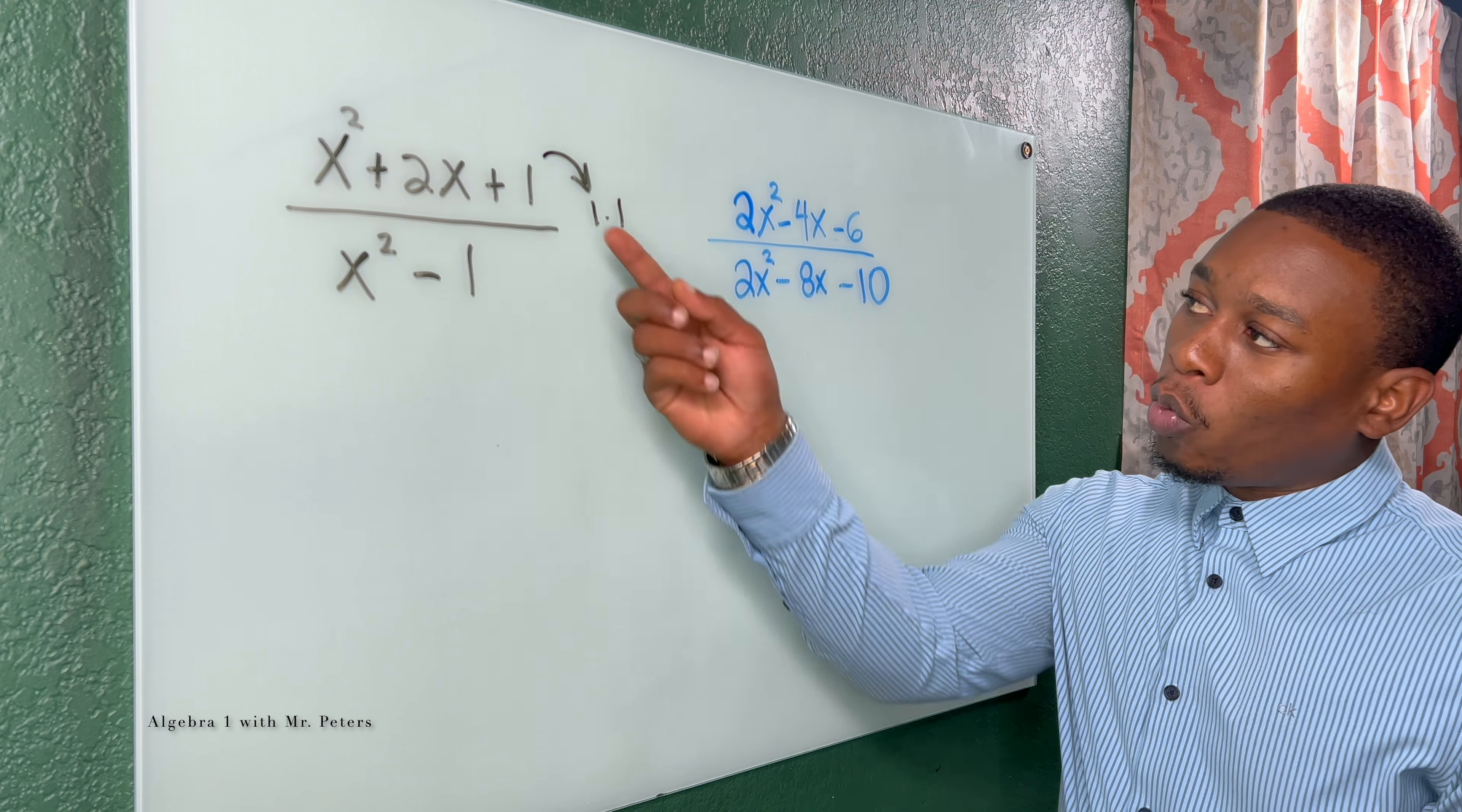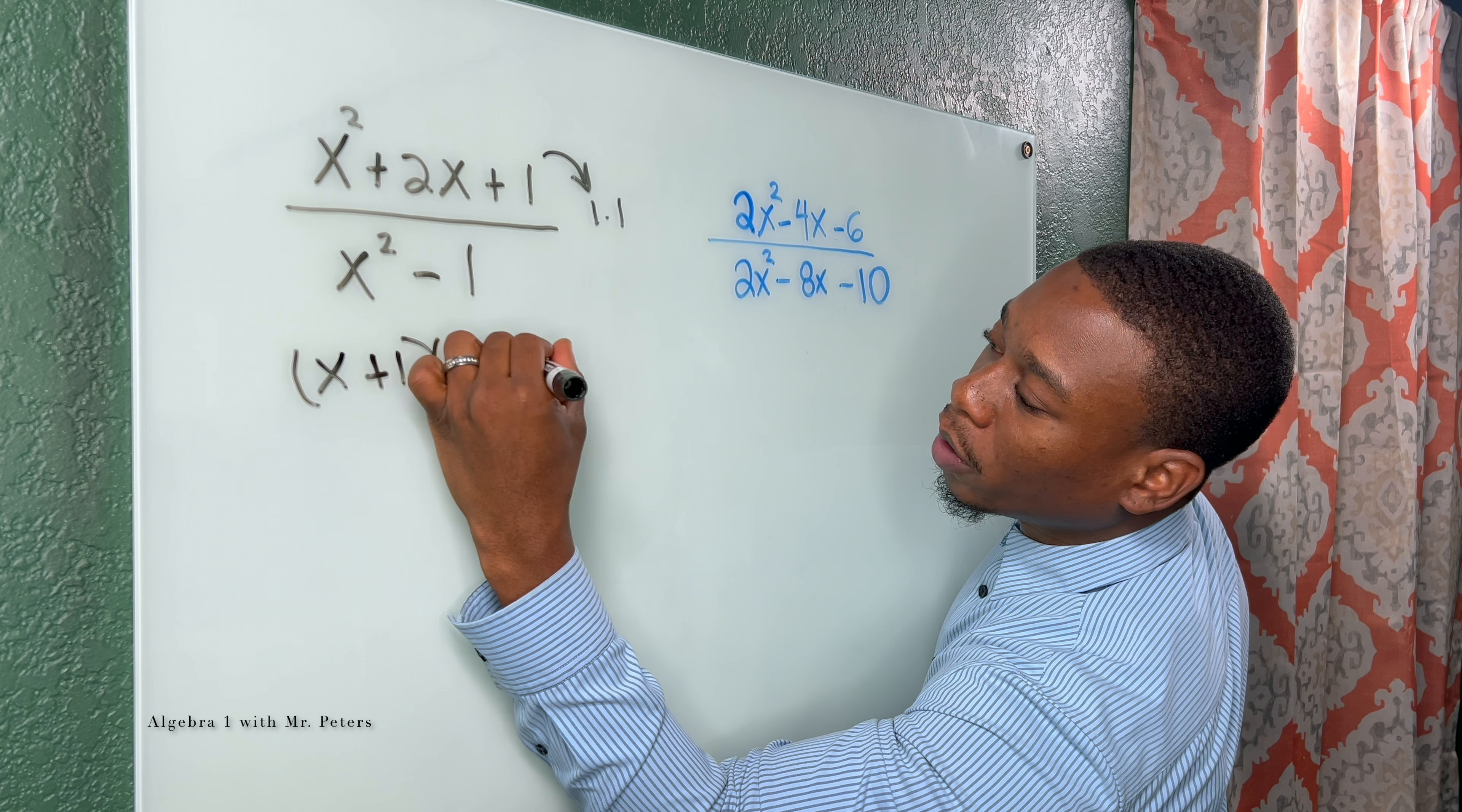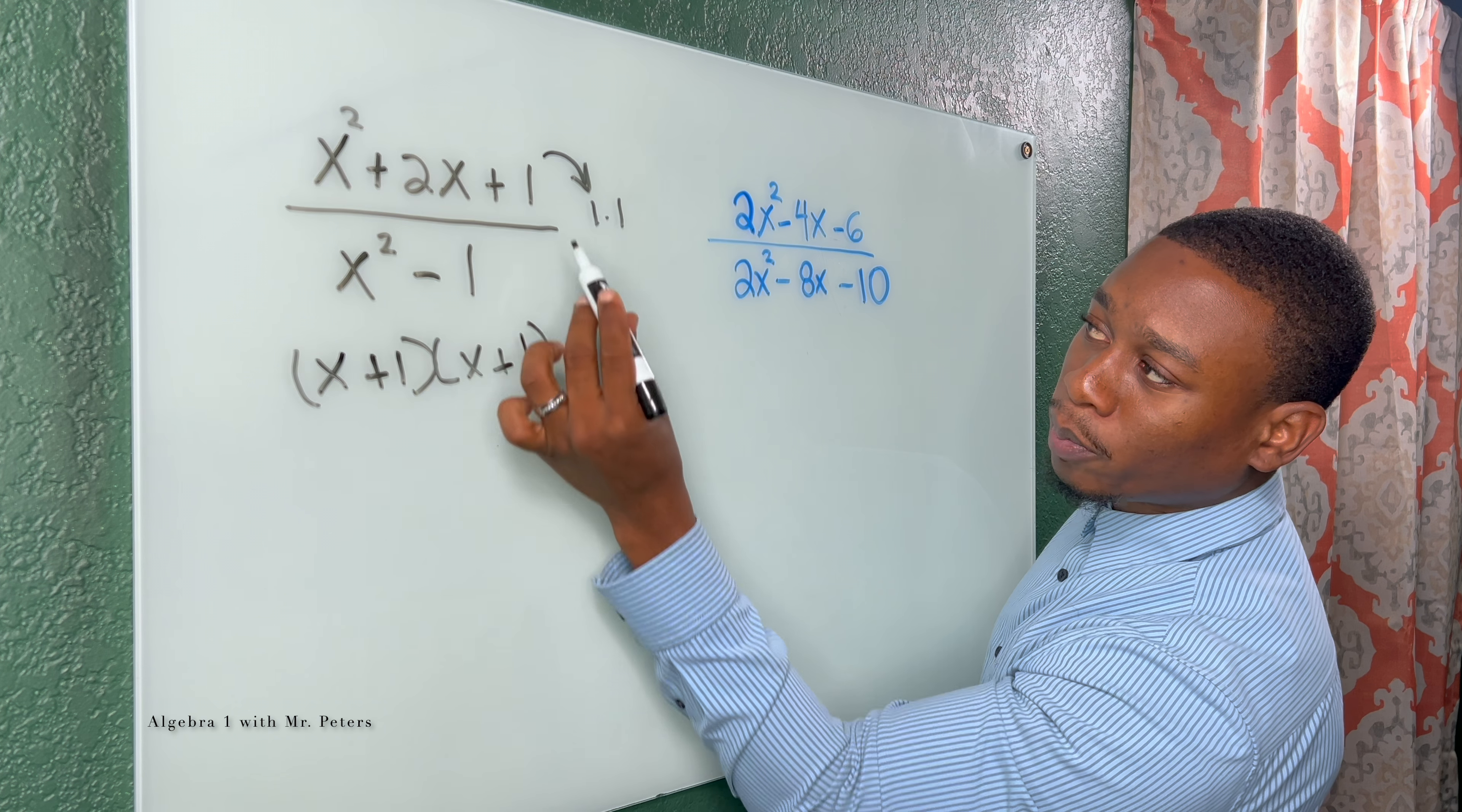And we should know that this is going to break down to x plus 1 times x plus 1. When we add these two factors, they give us 2x, and we multiply, it gives us the 1.